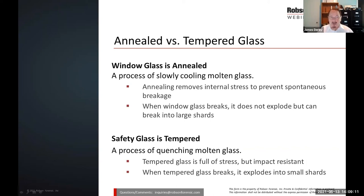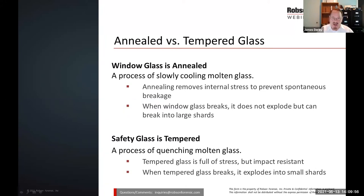When window glass breaks, it does not explode. Normally window glass is well annealed, but if it does break, it breaks into large, dangerous shards. In 1977, the use of tempered glass became a requirement in shower glass, simply because of the incidences of very large, sharp shards. Safety glass — tempered glass — does not produce those large shards. When safety glass fractures, it produces half-inch size glass shards. People still get cuts, but the cuts are much more minor than they would be with large shards from window glass.